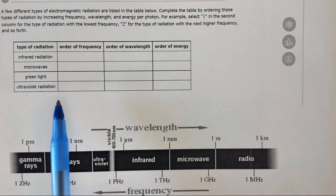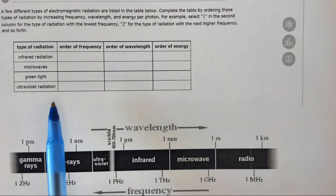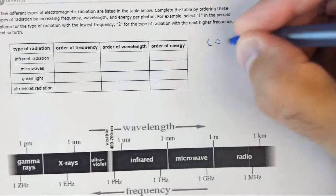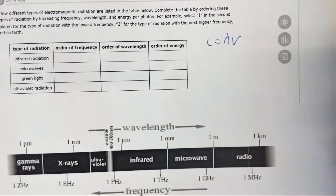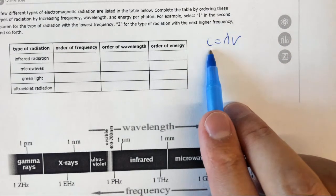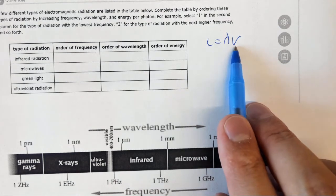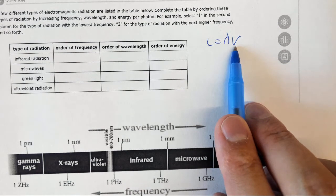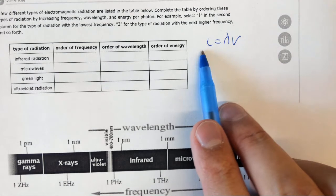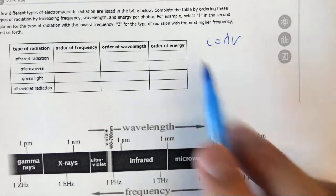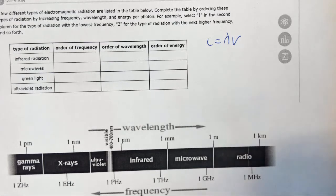Well it turns out that energy, frequency, and wavelength are all related by constants. So for example, c equals lambda nu. What this means is the speed of light, which is constant, 3 times 10^8 meters per second, equals the wavelength times the frequency. So wavelength and frequency are related by a constant. Said another way, if you know one you can calculate the other because they're related by a constant.